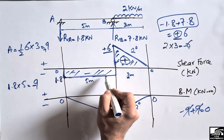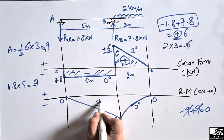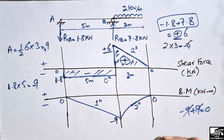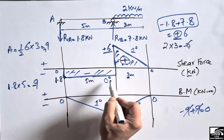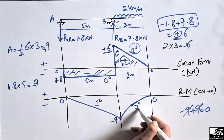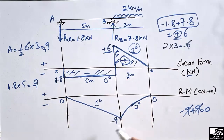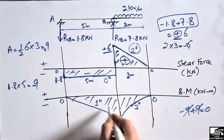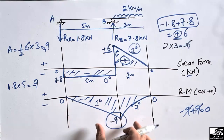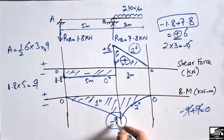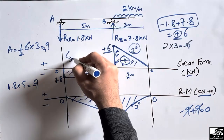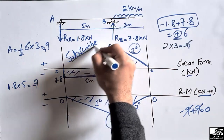The bending moment diagram line is always one degree greater than the shear force line. Where shear force is zero degree (constant), bending moment is first degree (linear). Where shear force is first degree (inclined), bending moment is second degree (parabolic). This is the complete bending moment diagram for this beam, with a maximum bending moment of 9 kN·m, which determines the reinforcement required. Hope you understand — please subscribe for daily civil engineering videos.